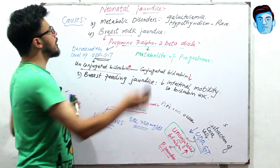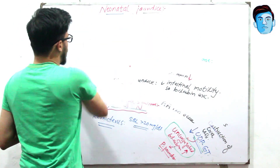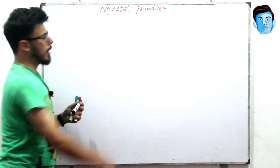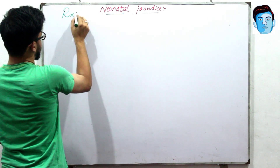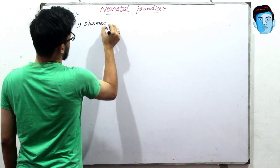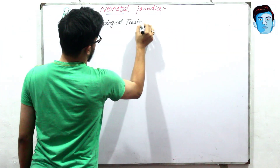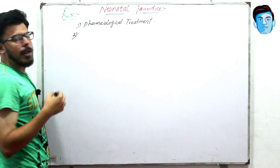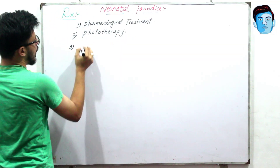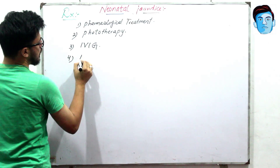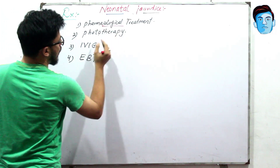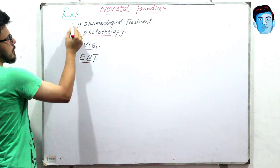Now let's discuss the treatment options for pathological jaundice. There are four treatment options available: pharmacological treatment, phototherapy, intravenous immunoglobulins, and exchange blood transfusion. The first two options are more commonly used.